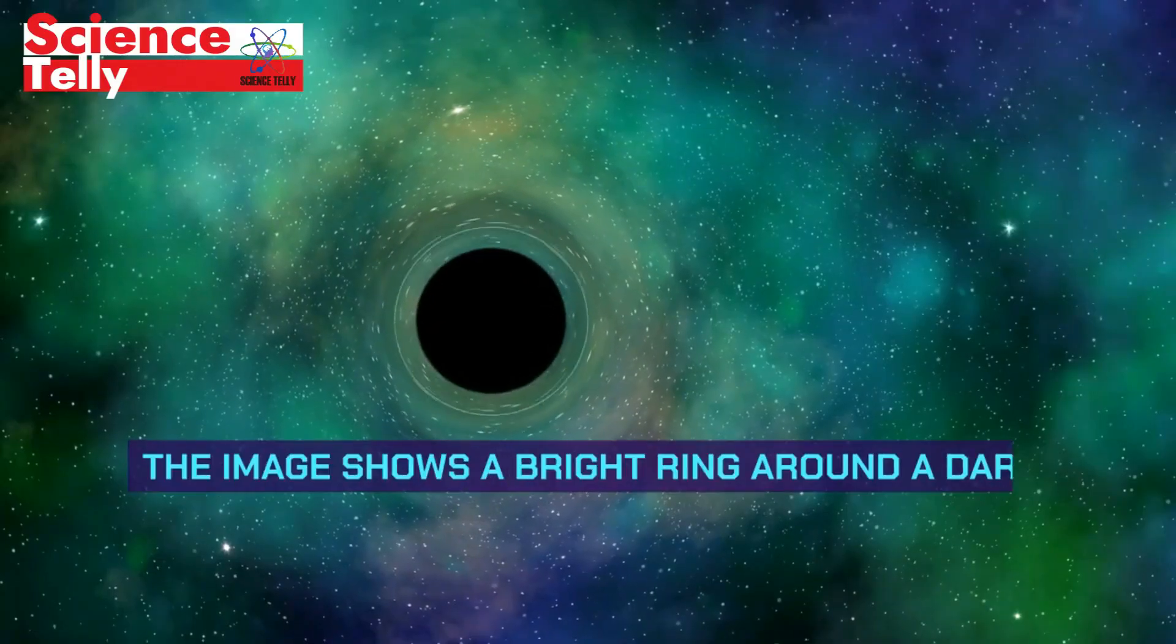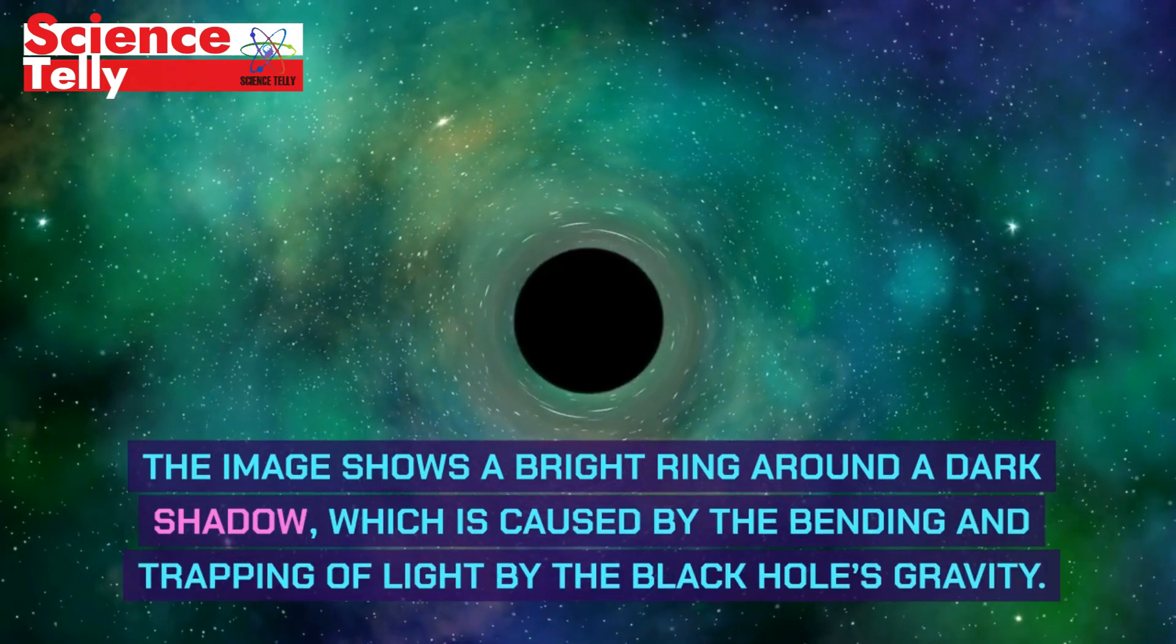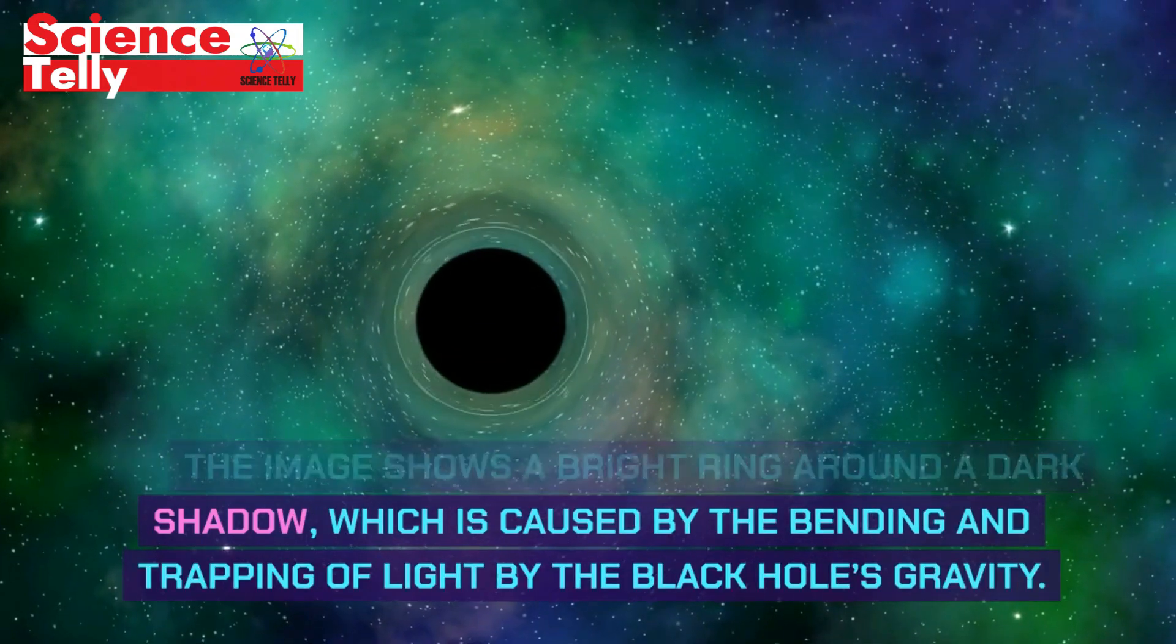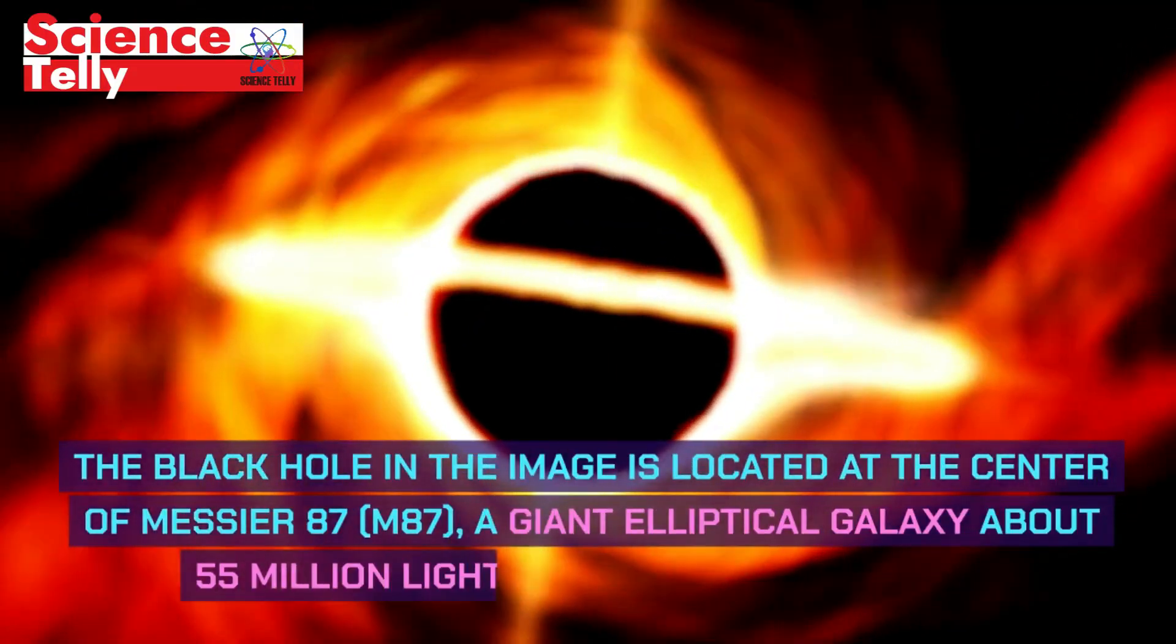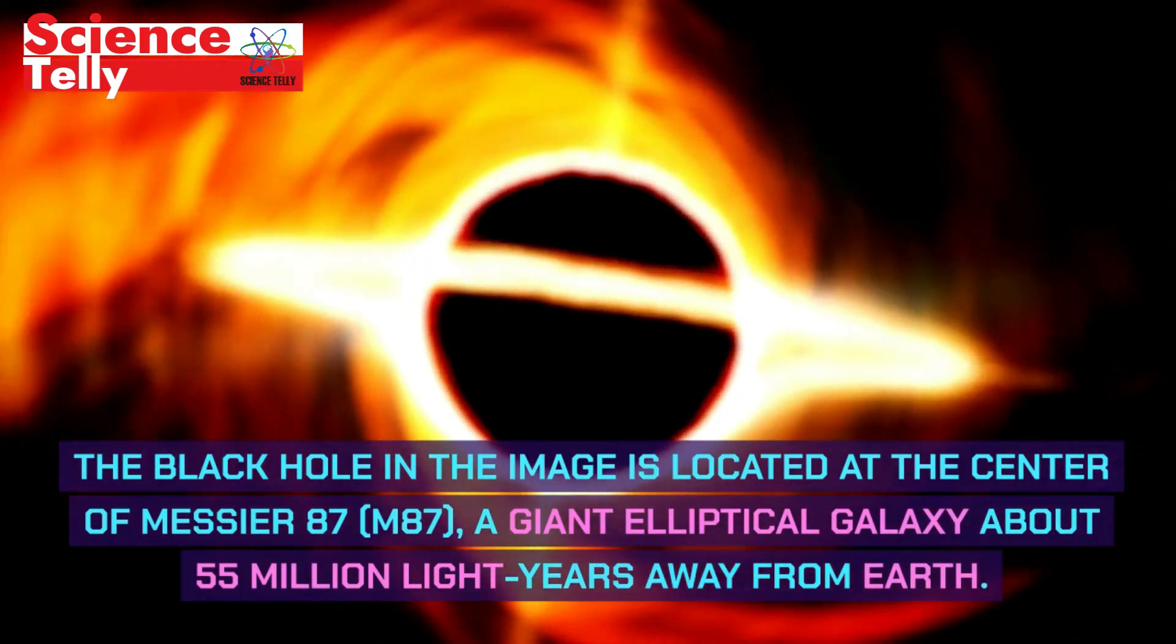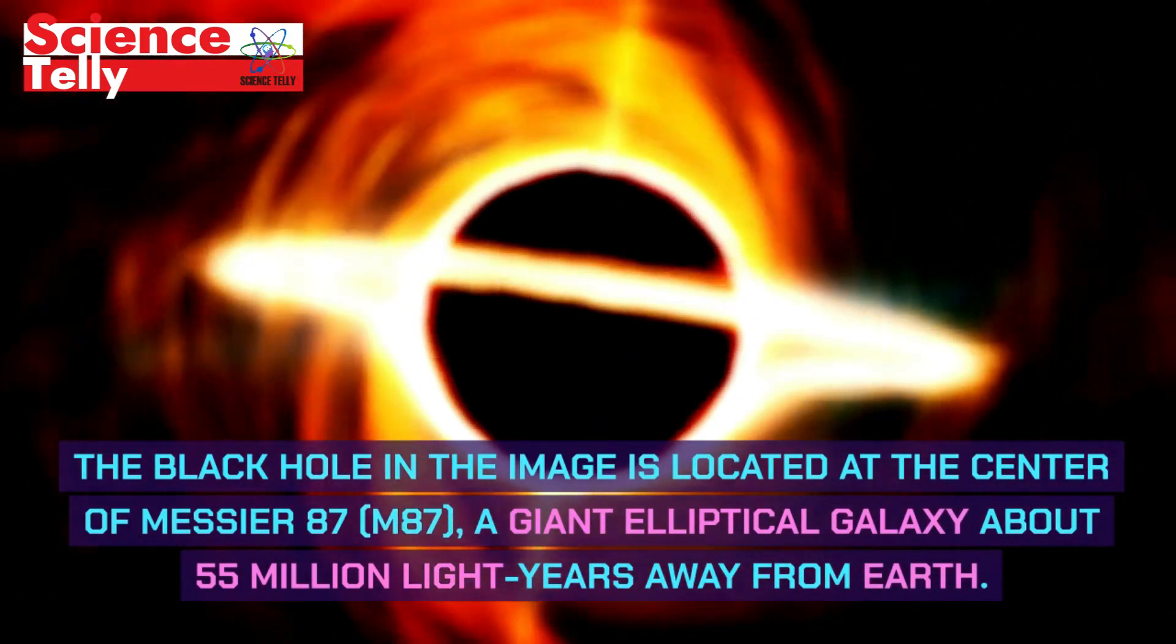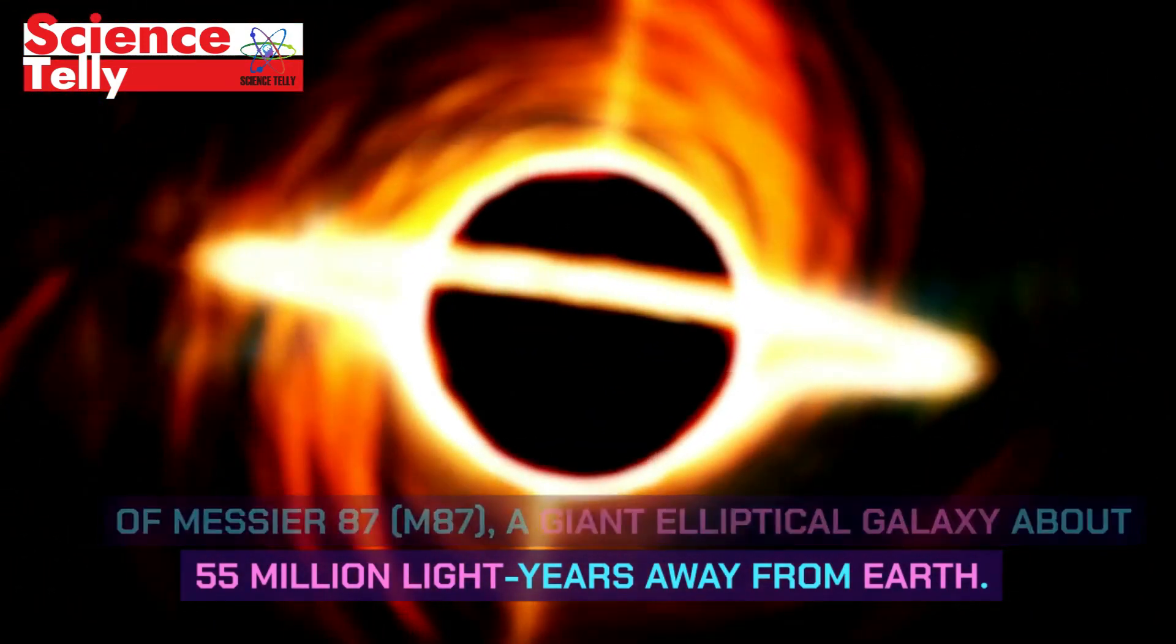The image shows a bright ring around a dark shadow, which is caused by the bending and trapping of light by the black hole's gravity. The black hole in the image is located at the center of Messier 87, M87, a giant elliptical galaxy about 55 million light years away from Earth.